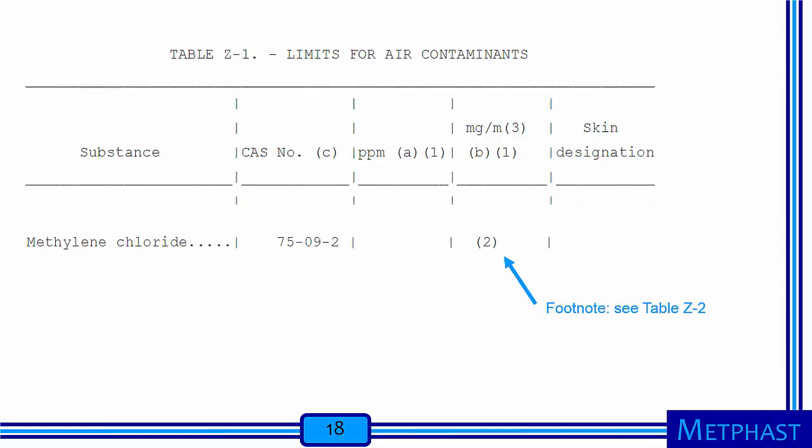The basis for these PELs is that even relatively non-toxic substances can overload the defenses of the respiratory tract. Respirable dust is the dust that can reach deep into the alveolar region of the lung when inhaled, and you have different defenses there. What if I'm interested in methylene chloride? Looking it up in Table Z1, I find a footnote — a 2 in parentheses — that tells me to see Table Z2, demonstrating how you really need to be persistent when looking these things up.